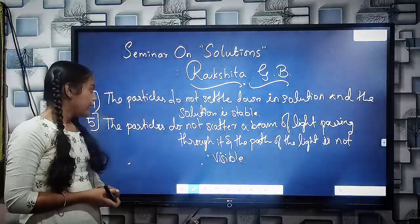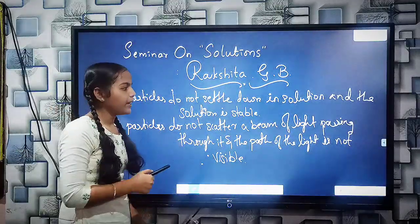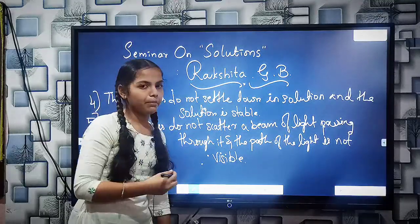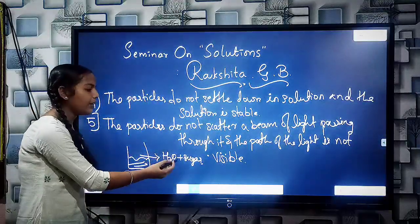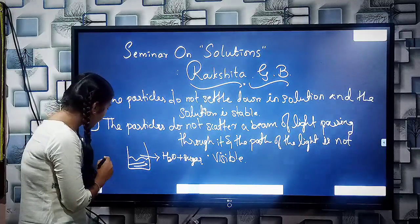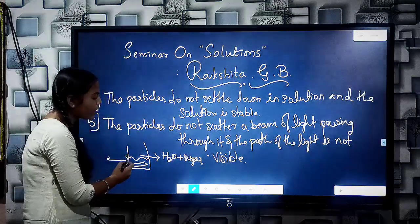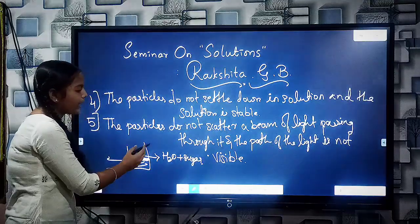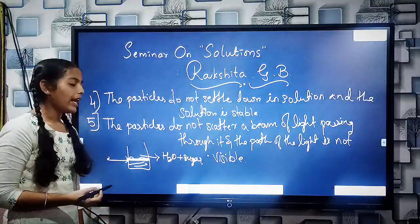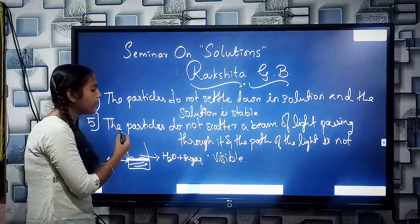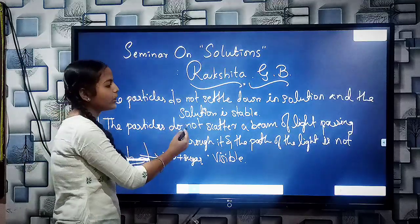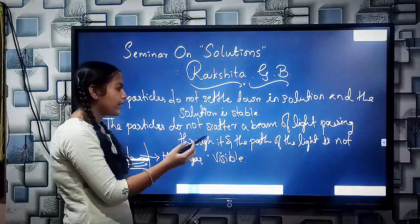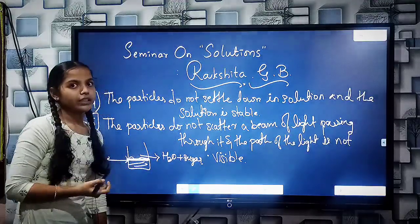The fifth property of the solution is that the particles do not scatter a beam of light passing through it, and the path of light is not visible in the solution of sugar and water. If we pass light through it, we cannot see the path of light because the particles do not scatter a beam of light. Hence the path of light is not visible in the solution.